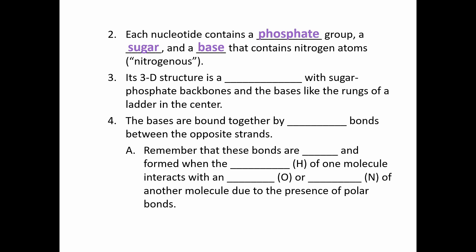Every single nucleotide is going to have a phosphate group, a sugar, and a nitrogen-containing base, also called a nitrogenous base, with a 3D structure called a double helix, which looks like a twisted ladder. The phosphate and the sugars form the backbone, and the bases form the rungs or the steps of that ladder in the center. The dotted lines connecting the bases together are hydrogen bonds. Hydrogen bonds are relatively weak, and they form when hydrogen and oxygen or hydrogen and nitrogen are attracted to each other.